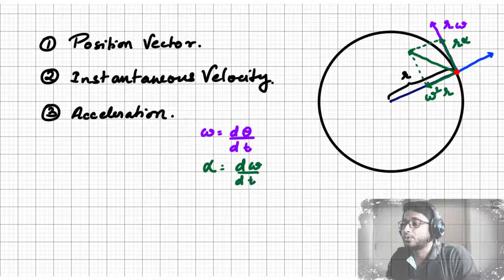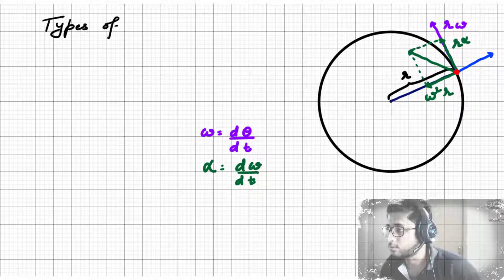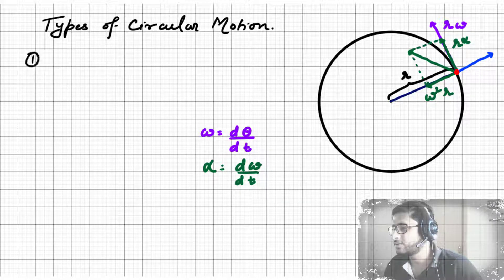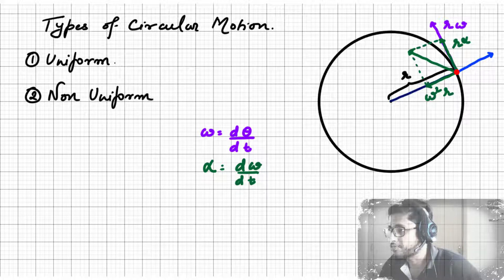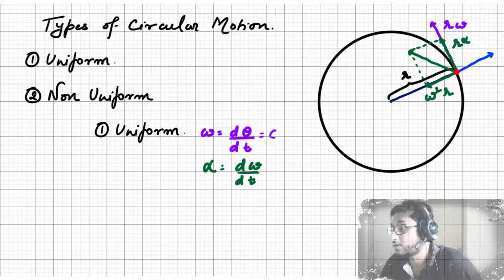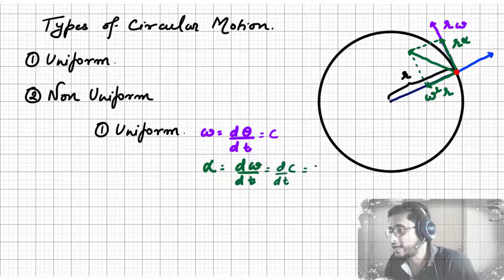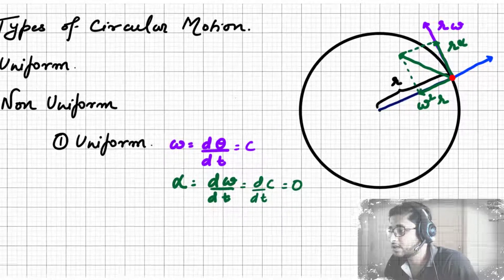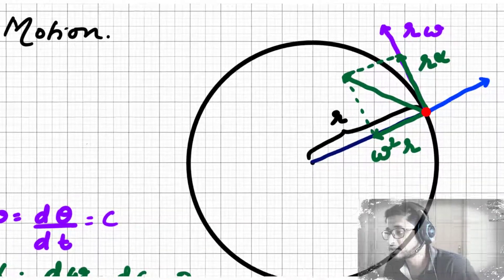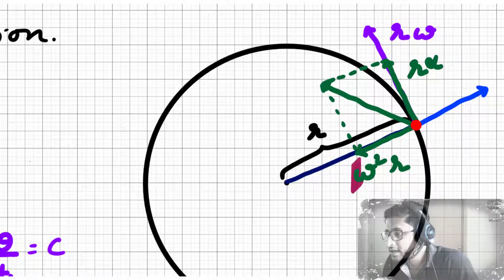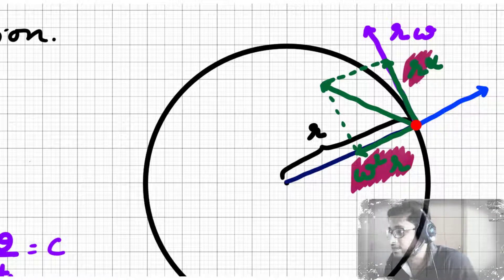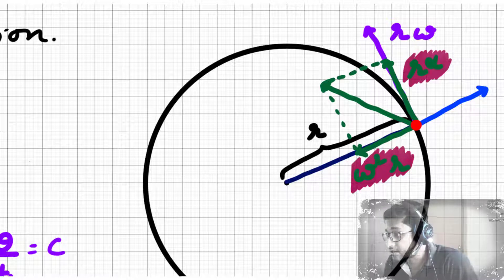Now we will look at the types of circular motion. Just like there are uniform and non-uniform linear motion, we have uniform and non-uniform circular motion. In uniform circular motion, the angular velocity of the particle remains constant, which means there is no angular acceleration. The acceleration of the particle executing circular motion has two parts: one along the direction opposite to the radial unit vector and the other along the tangent.